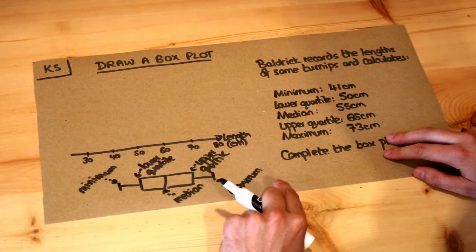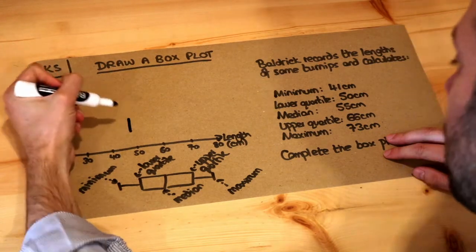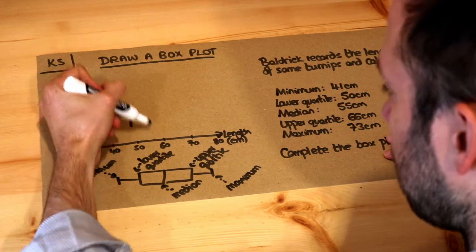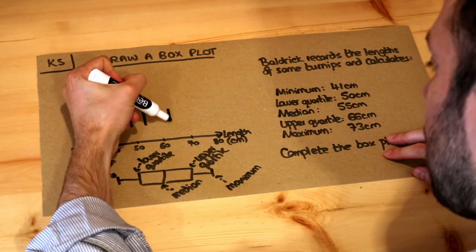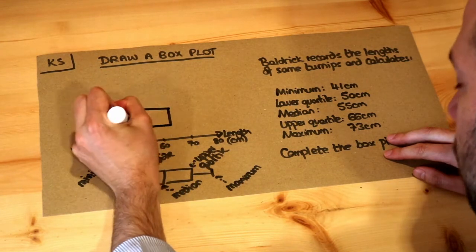Let's draw the box in the middle first. We've got the lower quartile is 50, so there's 50. Let's do a horizontal strike. The median is 55, there's 55 about there, and the upper quartile 66 which is here. And then we're going to join the top and the bottom to form a box.